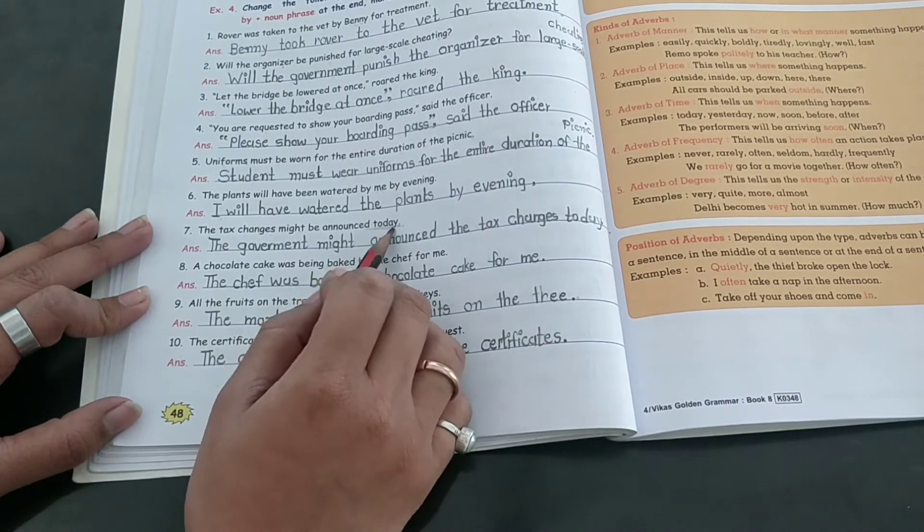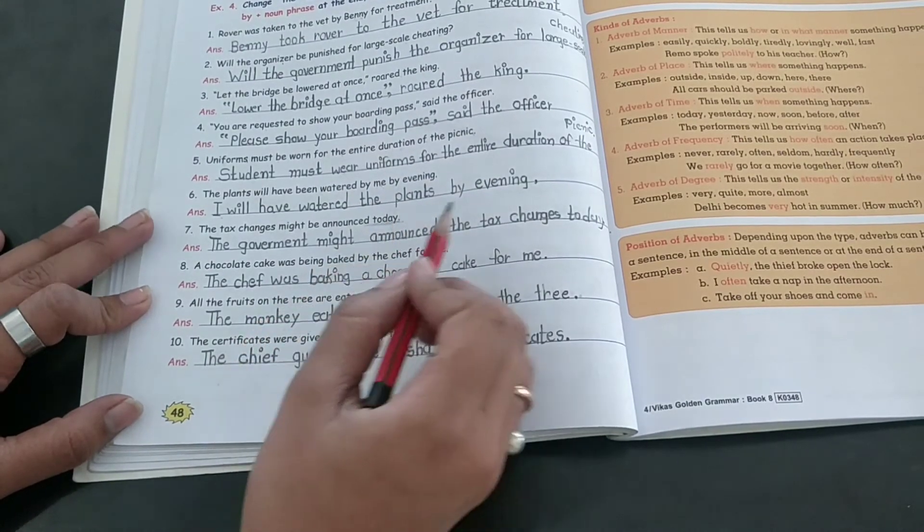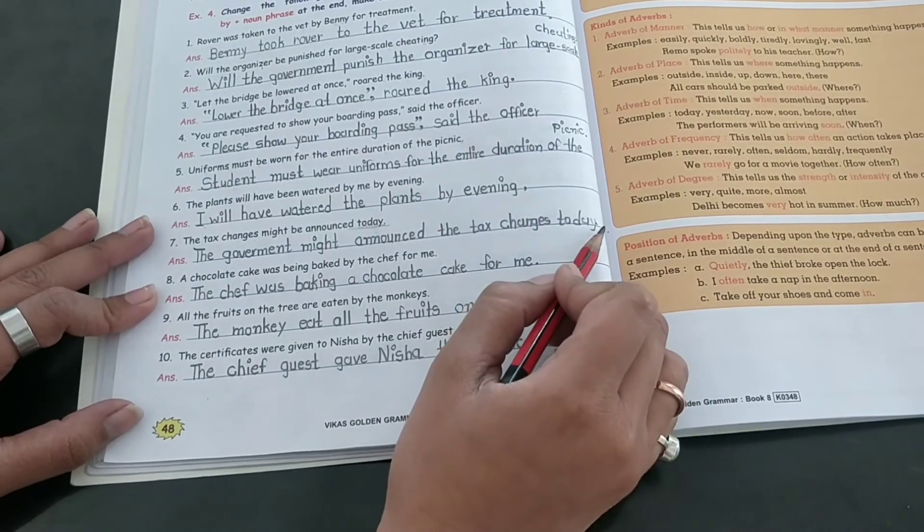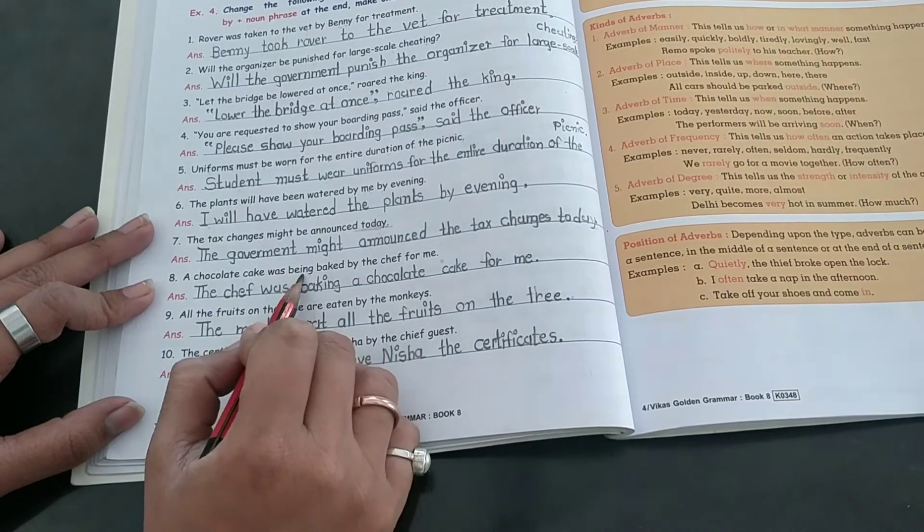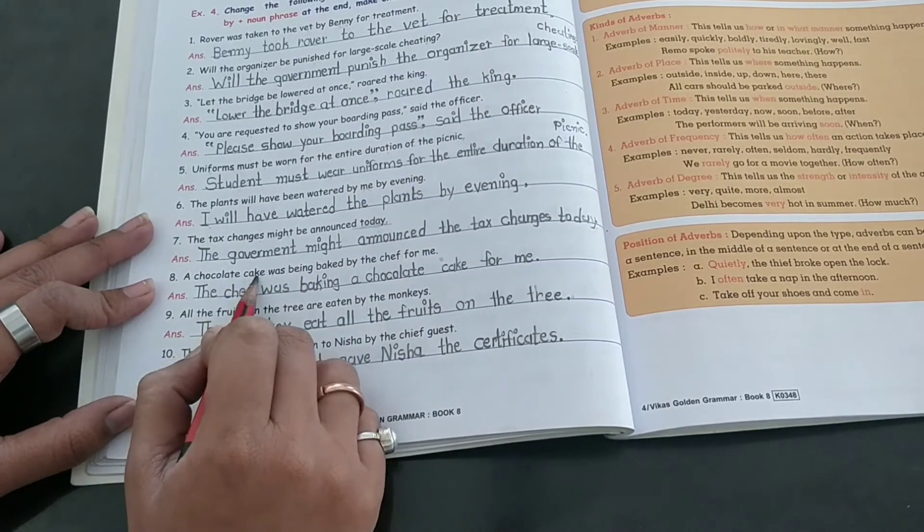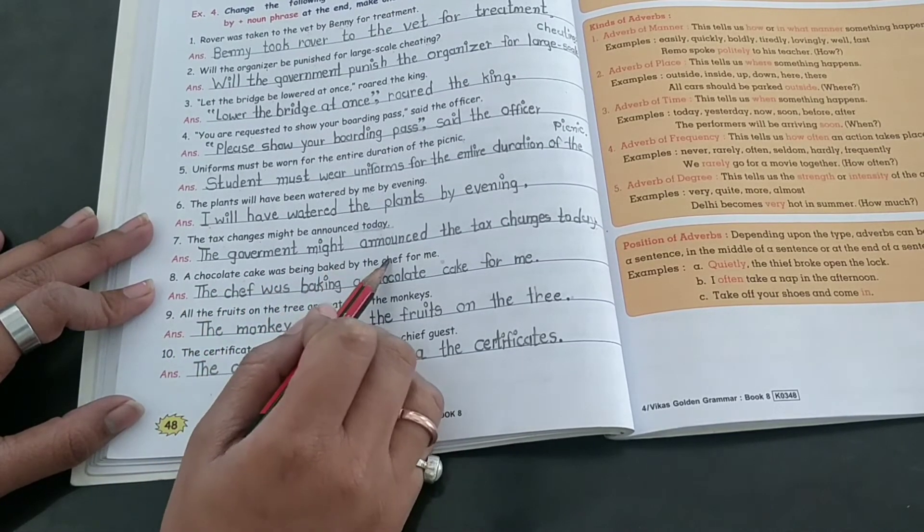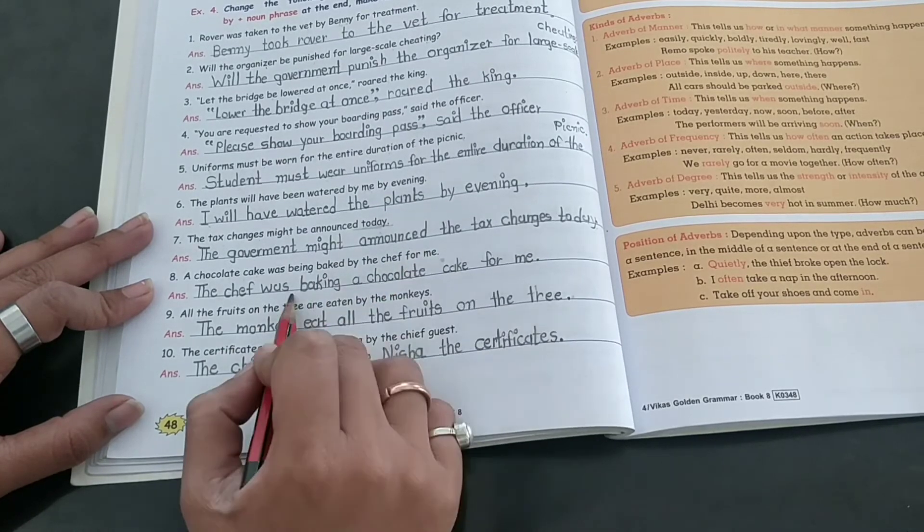Other words, kriya sori, other words. A chocolate cake was being baked by the chef for me. The chef was baking...